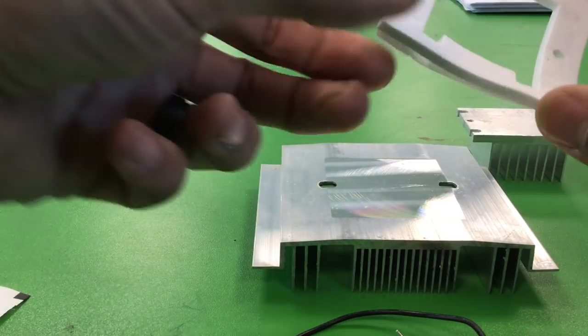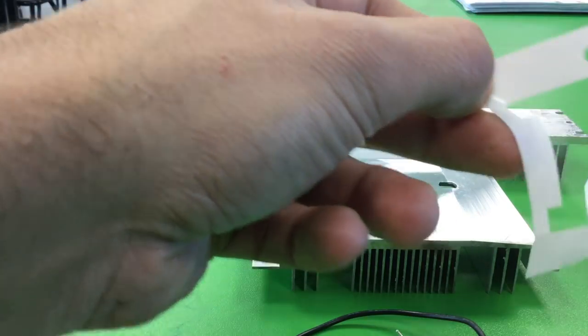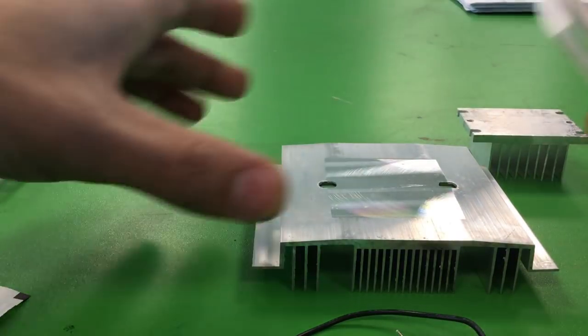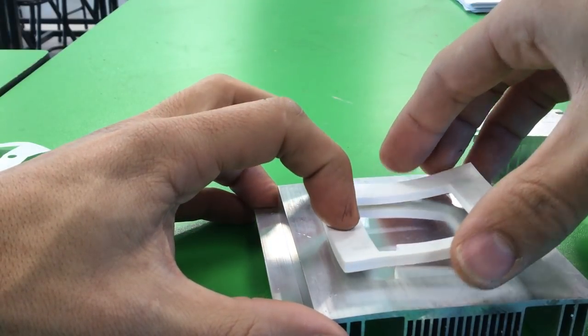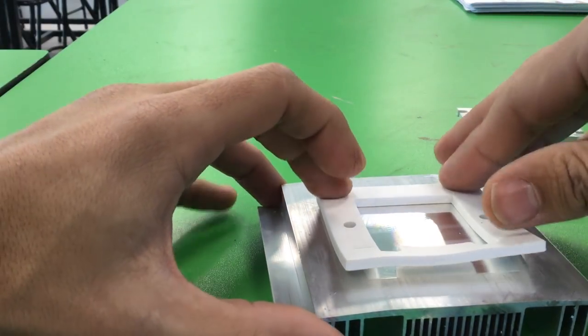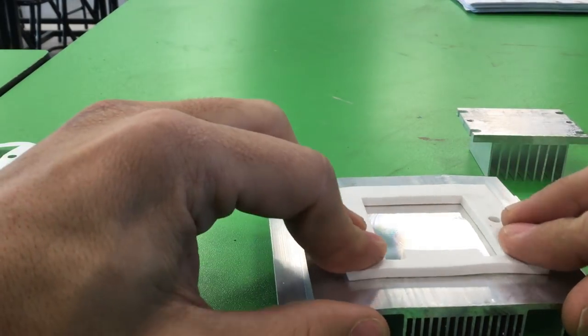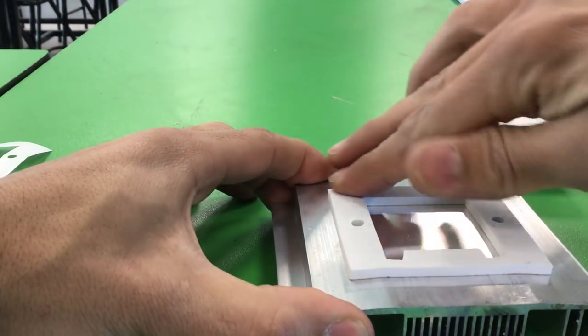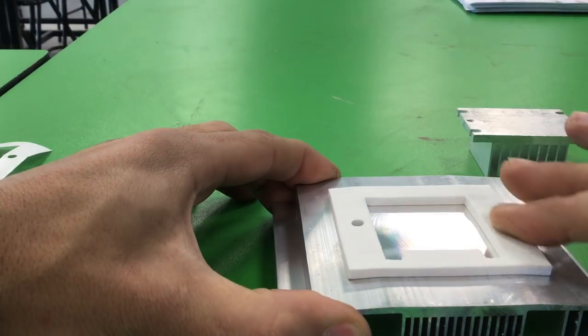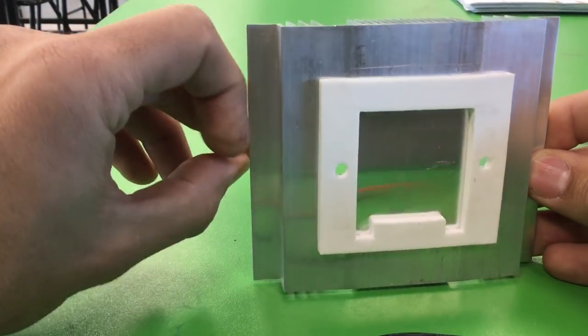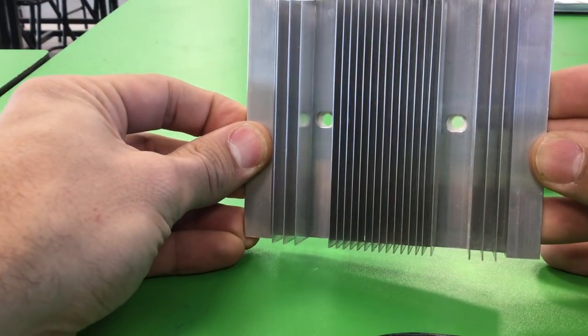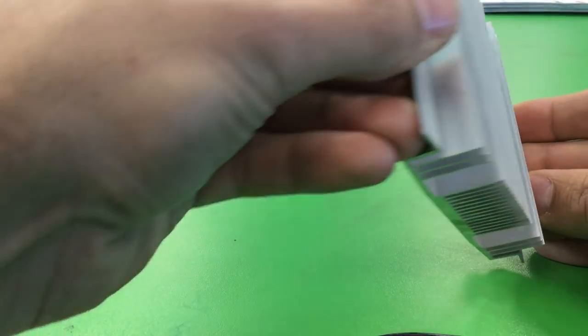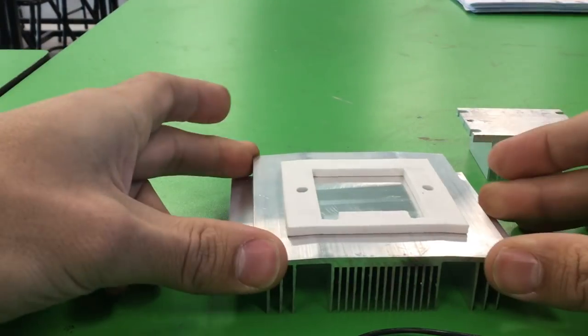Peel the sticker off and line this up as well as you can with the holes, the center of the holes on either side. Press it down without touching the middle. From this side you see the H. From the other side you can see that foam is perfectly in the middle of those holes, which is a really good job.